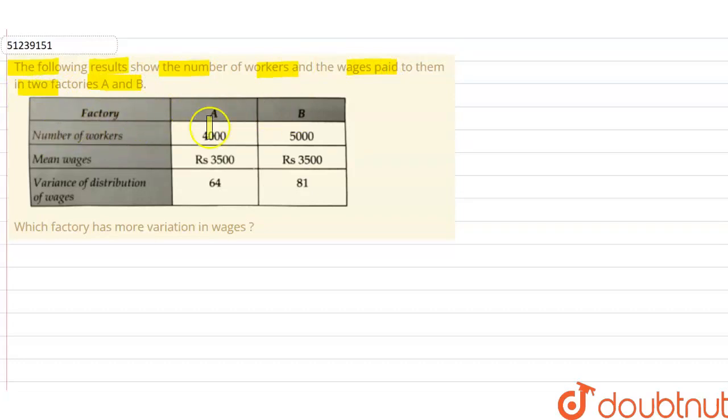The number of workers in factory A is 4,000. In factory B, the number of workers is 5,000. In factory A, the mean wages is Rs. 3500 and in factory B, the mean wages is Rs. 3500. The mean wages are both the same.